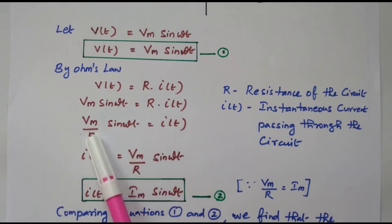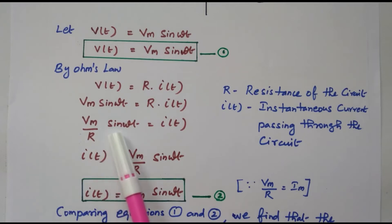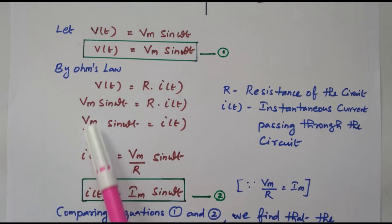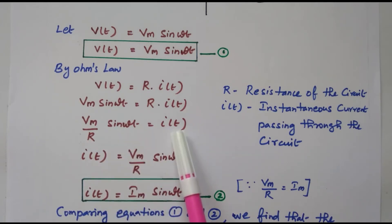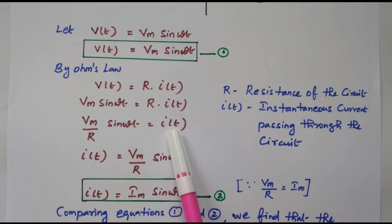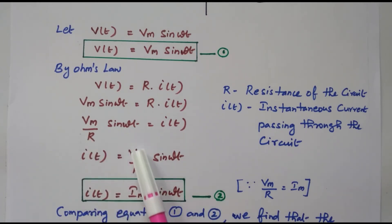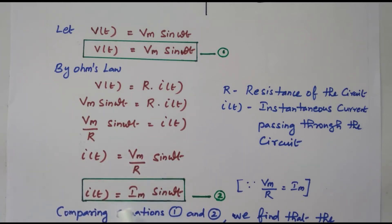Bringing R to the denominator: Vm/R · sin(ωt) = I(t). Now Vm/R is nothing but the maximum current Im, since V/R equals current. So I(t) = Im sin(ωt), where Vm/R = Im is the maximum value of current, R is the resistance of the circuit, and I(t) is the instantaneous current passing through the circuit at a given instant.